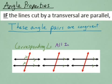Additionally, alternate interior angles are congruent. For example, those two angles are congruent there, as well as the other pair of alternate interior angles.